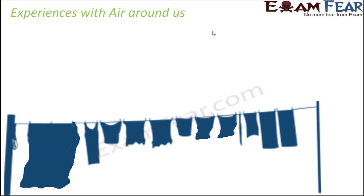Now how do we believe that air is present all around us? Have you ever noticed that when you keep wet clothes outside in the sun for drying, you just put them on a rope and tie them with clips, and after some time you see that the clothes keep waving here and there. They wave due to the presence of air. So when you see your clothes moving, you can visualize that they are moving because air is there — nobody else is making them move. So air is the only thing that can make them move, which shows that air is present around us.